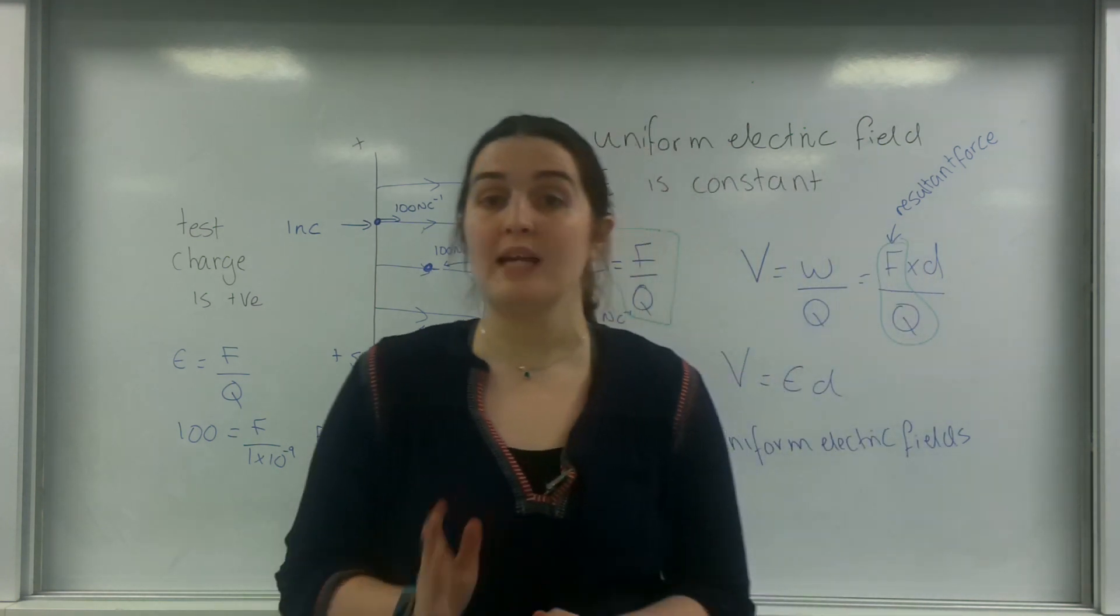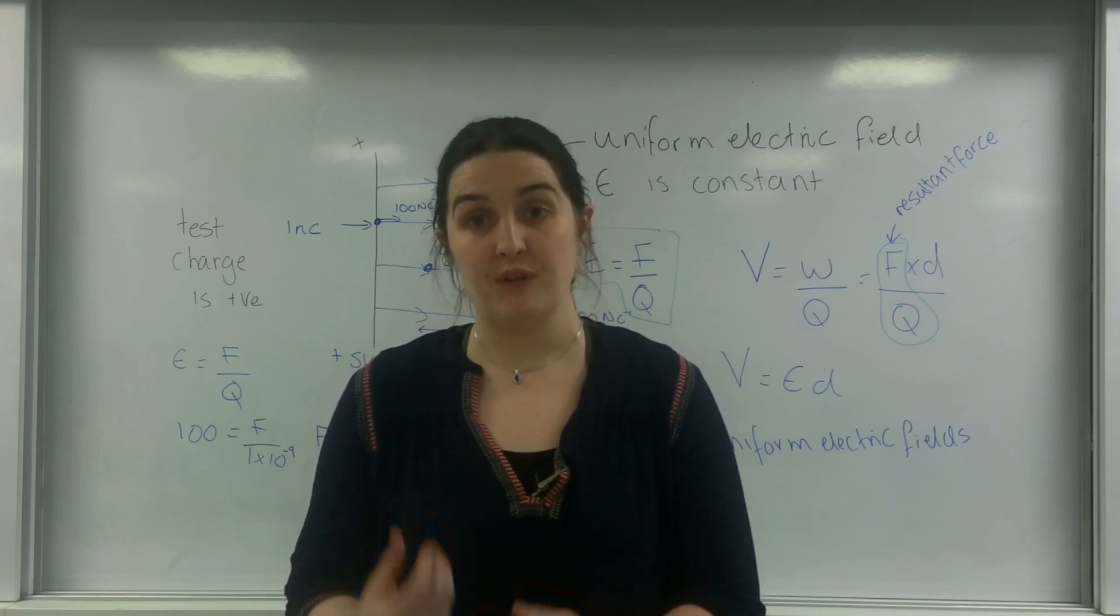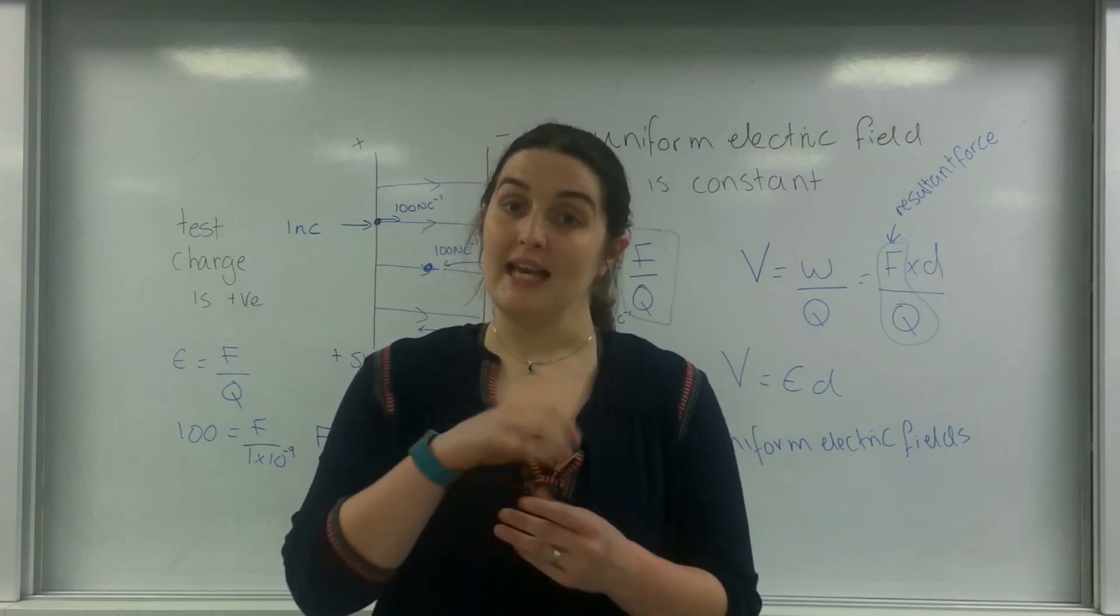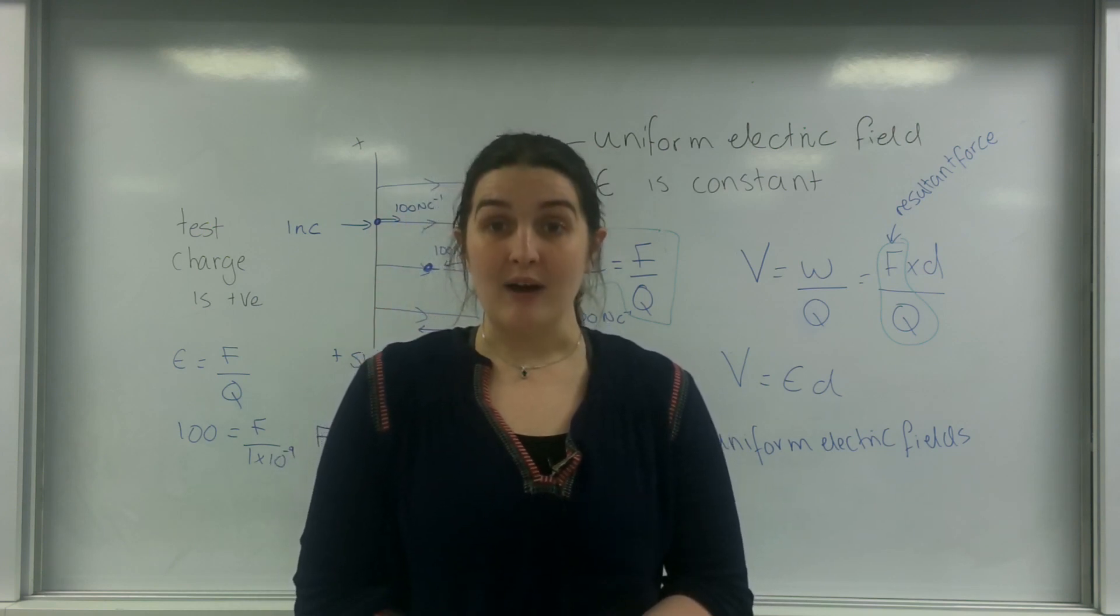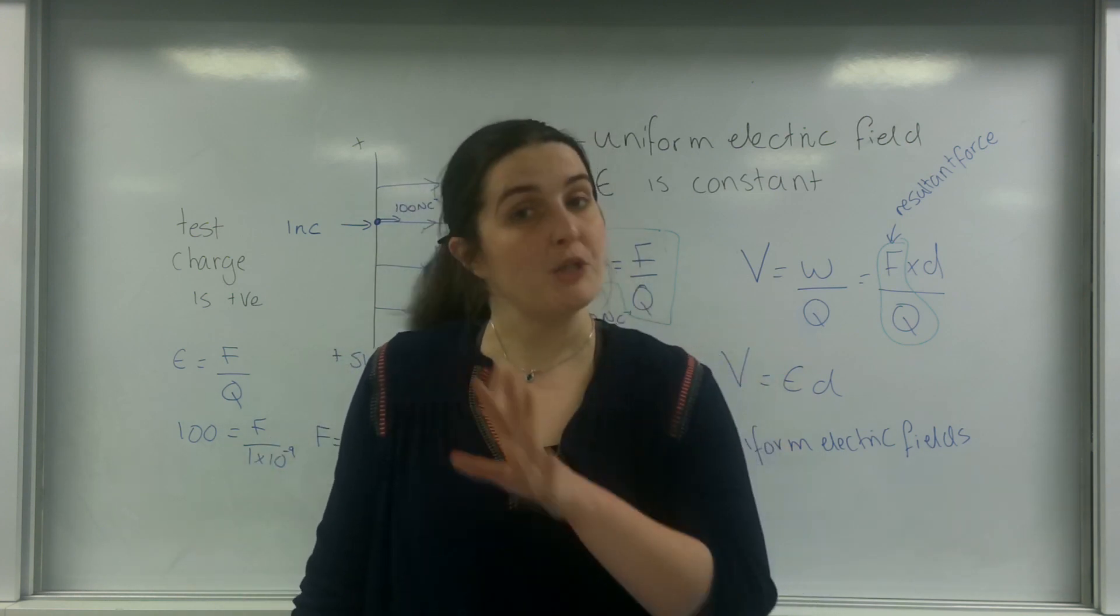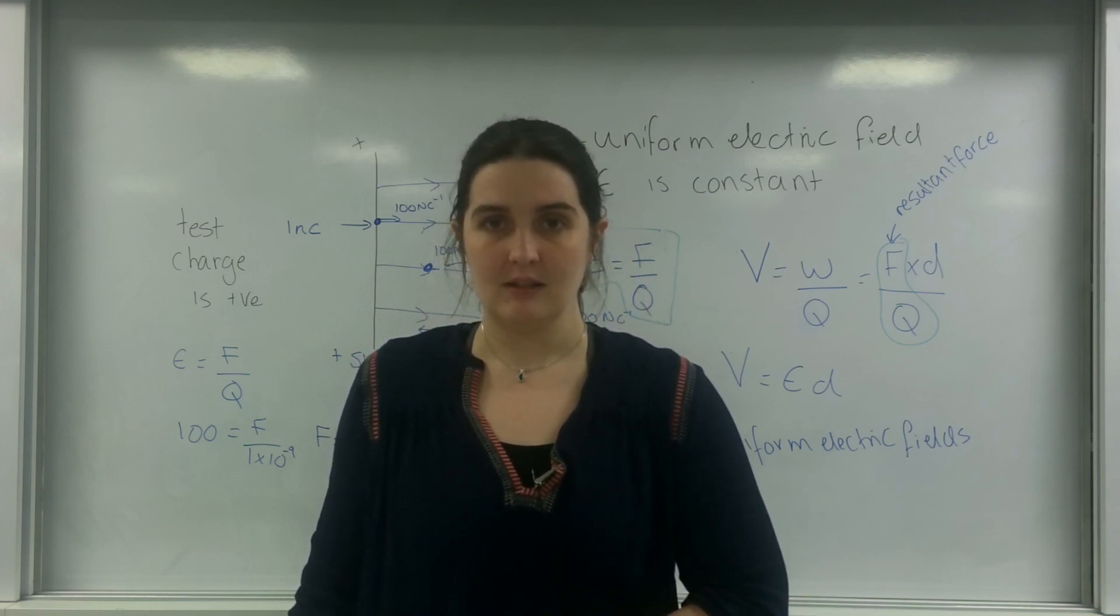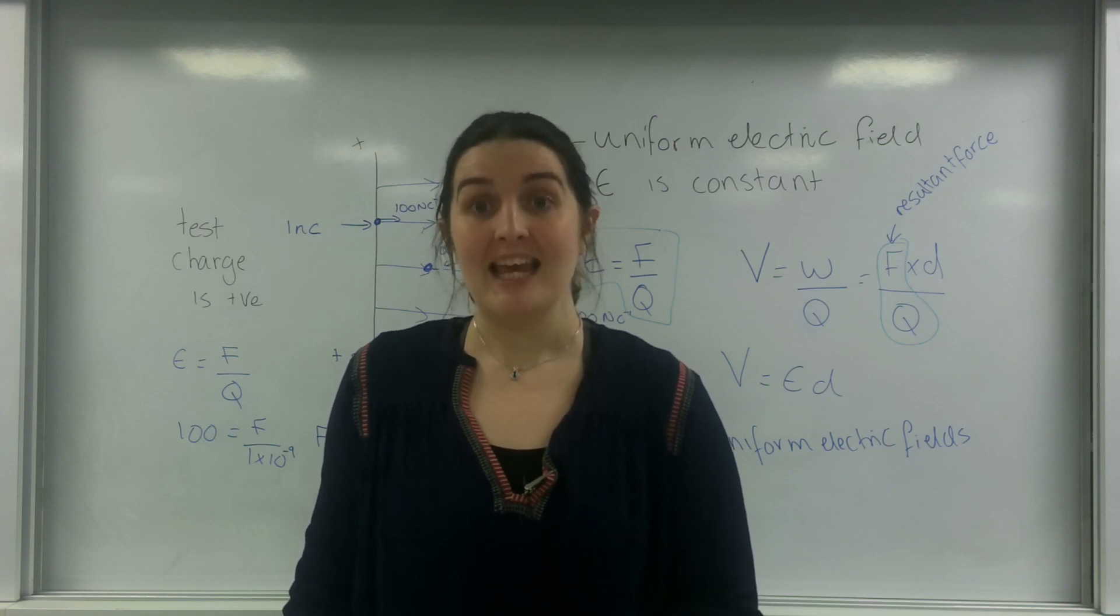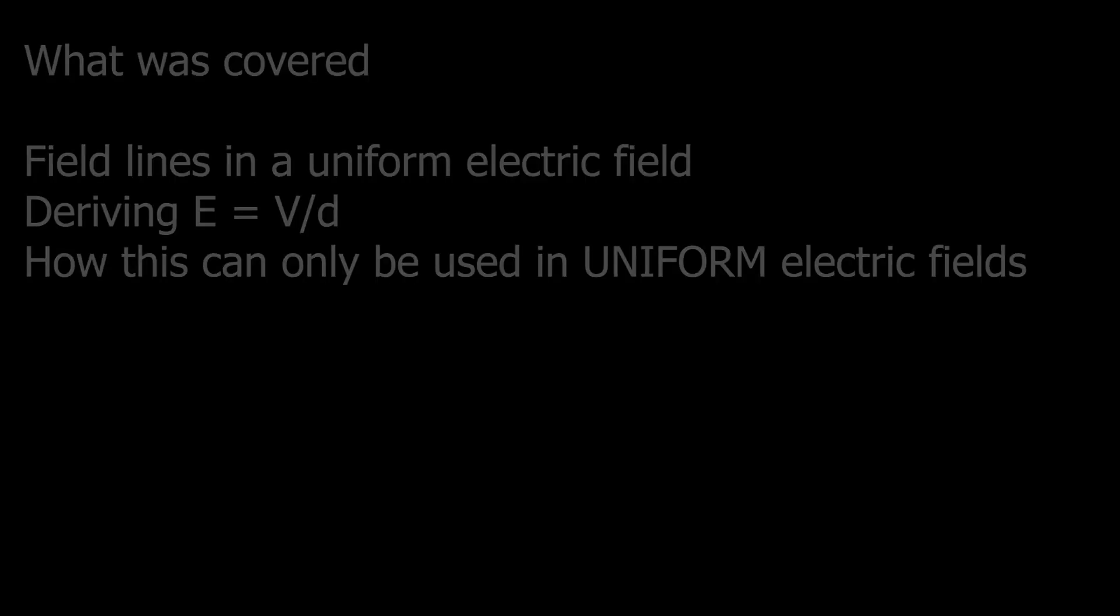So this is quite useful, that we can work out the force that this object is feeling. So this here is a very special case for uniform electric fields. I can use E equals V over D to work out the electric field strength, and then use E equals F over Q to work out the force the object would feel anywhere in that field. That is electric field strength in a uniform field.